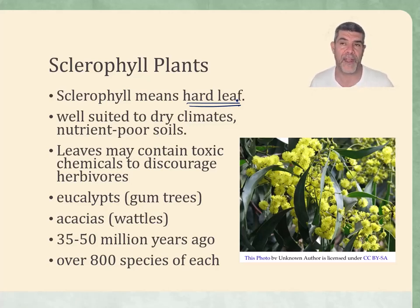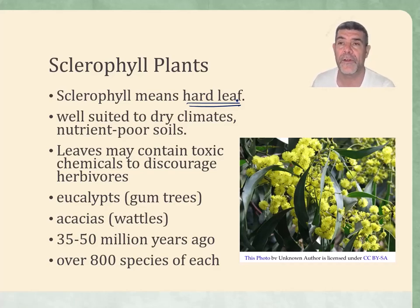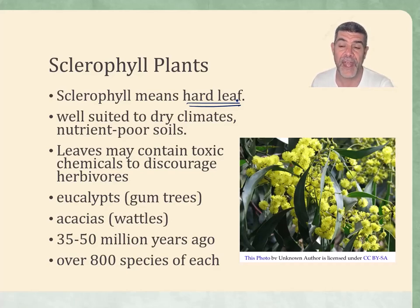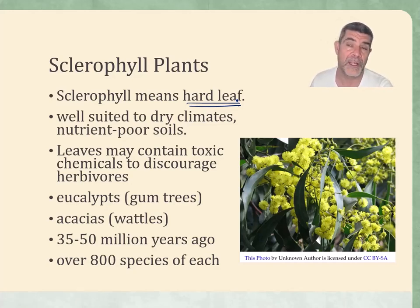As Australia drifted north away from the Gondwanan supercontinent, it broke its last contact with Antarctica, and as it moved further and further north, it became drier. As a result, a lot of the adaptations we see in many native species are associated with drying, drought conditions, that reduction in the amount of rainfall, and warmer conditions generally.